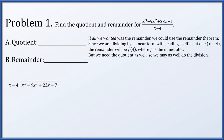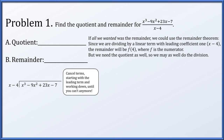We set up x minus 4 going into x cubed minus 9x squared plus 23x minus 7, and we ask: if I want to cancel out x cubed, what do I need to multiply x minus 4 by? We keep doing that procedure — multiply by something to cancel out the remaining leading term, then subtract that product and keep going until you can't anymore, because the degree of what you're working with is less than what you're trying to divide by. To cancel x cubed, we multiply x minus 4 by x squared, producing x cubed minus 4x squared. We then subtract that from the numerator, which cancels out the x cubed, giving us minus 5x squared plus 23x minus 7.